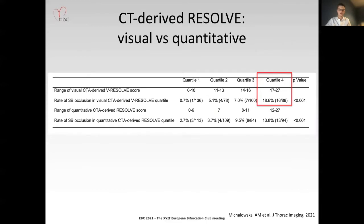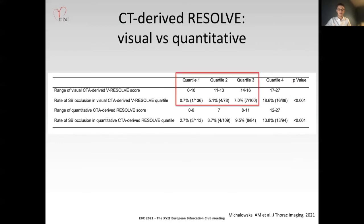Moreover, our data confirmed the ability of the CTA-derived visual Resolve Score to stratify lesions into high-risk and non-high-risk groups of side-branch occlusion, specifically using a cutoff value of 17 points, defined as the lowest score in quartile four. The incidence of side-branch occlusion was significantly higher in the high-risk group at nearly 19%, compared to the non-high-risk group at cumulatively 3.8%.